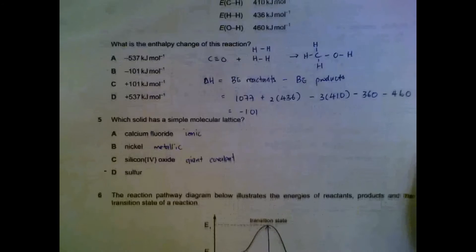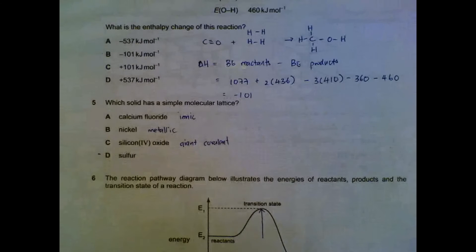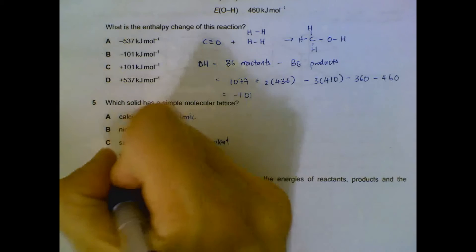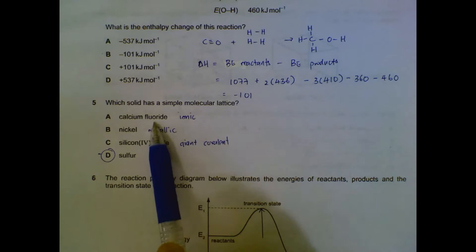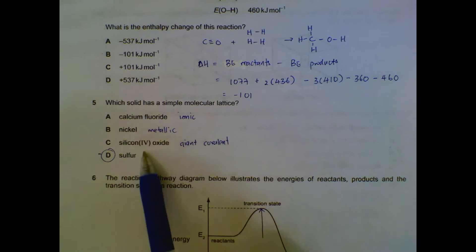Number five: which solid has a simple molecular lattice? Sulfur: simple molecular structure. Calcium fluoride is ionic, nickel metallic, silicon oxide is the giant covalent structure.